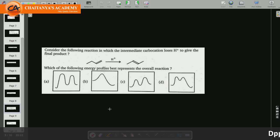So students, in this case what you have given is they have considered the following reaction in which the intermediate carbocation loses H plus to give the final product. Which of the following energy profile best represents the overall reaction?